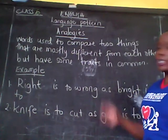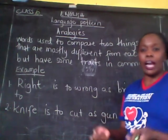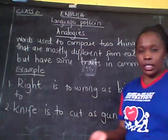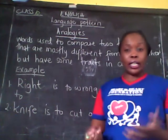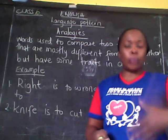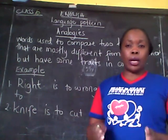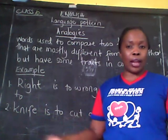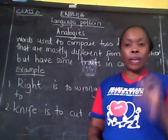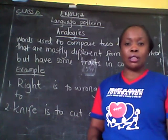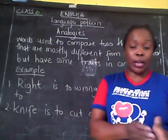Analogies are used to compare two things that are mostly different from each other but they have a common trait or some traits in them. Like we persons are animals, and you find that we persons can't be compared to other animals, but when you are comparing, you must ensure that whatever you are comparing has a similar trait with the one you are comparing to.